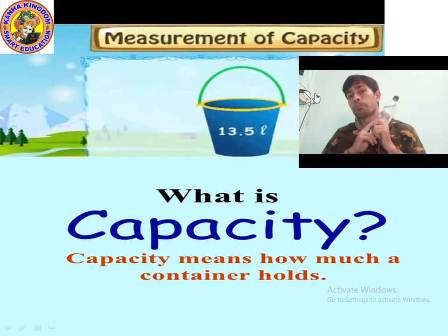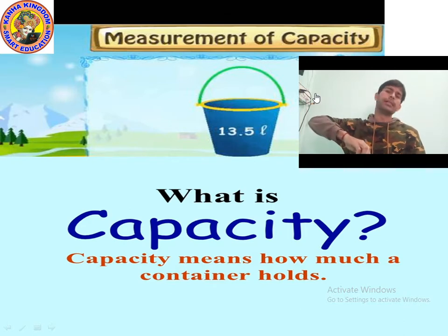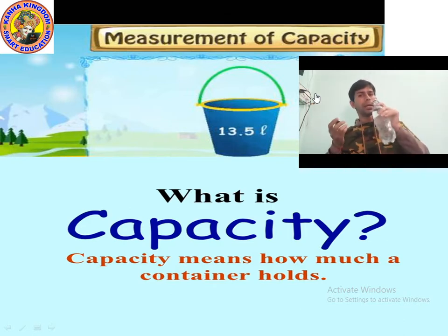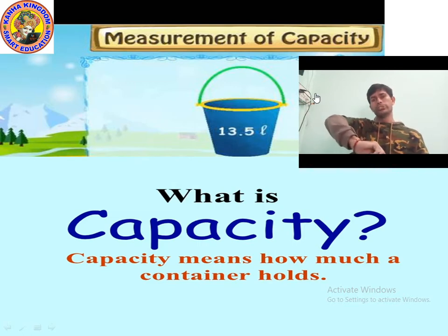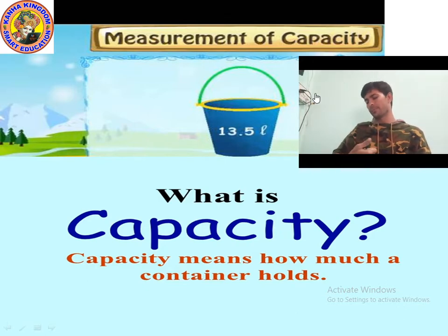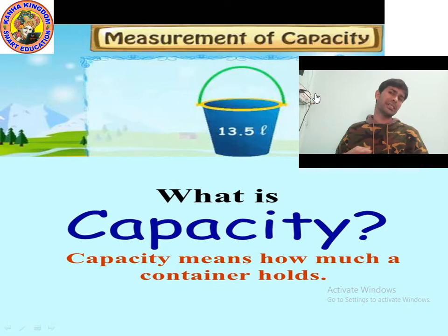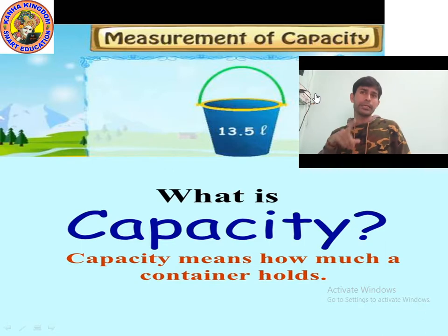What is liter? Liter is the unit of capacity. The definition of capacity: capacity means how much a container can hold. If you buy a packet of oil, check the instructions on the packet — you will find the capacity is one liter. Capacity is measured in milliliter or liter. Milliliter is written as mL, and liter is written as L.